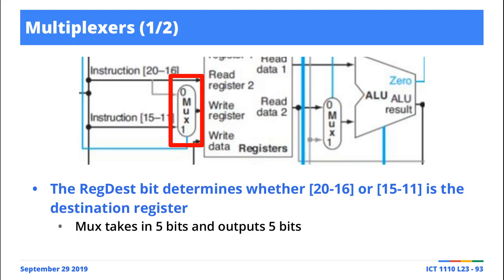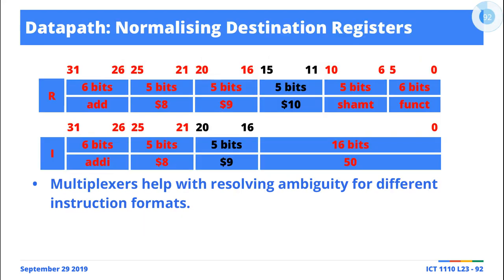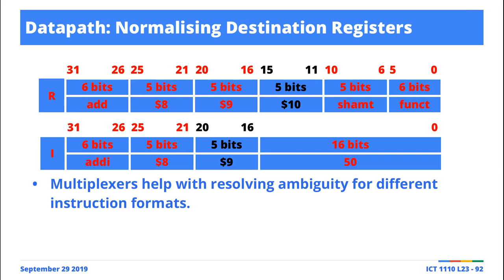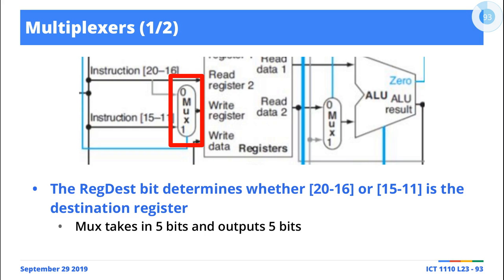Back to the same example to showcase what actually happens. Imagine a situation where you're dealing with an add instruction and an addi instruction. For an add instruction, the destination register is going to be bit segment 15 to 11. But for an addi instruction, the destination is going to be bits 20 to 16. This is where the mux comes in. The multiplexer that sits between these wires and the register file determines exactly which input is supposed to go into the register file, or which register should act as the destination register.